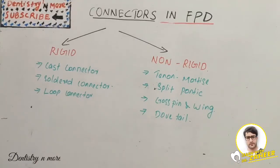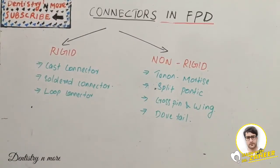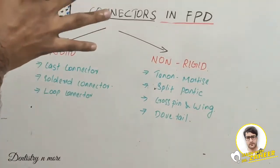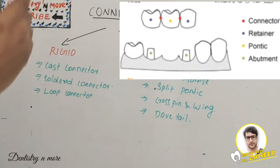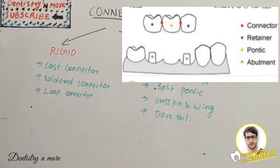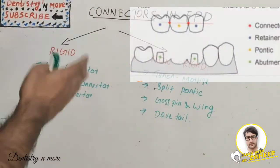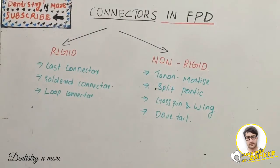Welcome back to another session in Dentistry MO. We are continuing our FPD sessions. So far we finished the components of FPD — the four components being pontic, retainer, abutment, and connector. Now we are on the fourth part of an FPD, that is the connector. A connector is nothing but a portion of the FPD that unites the retainer and pontic.